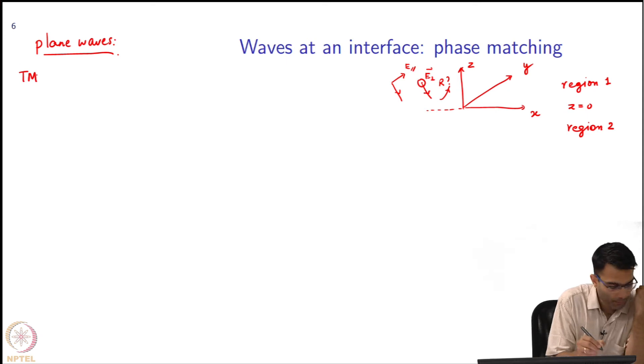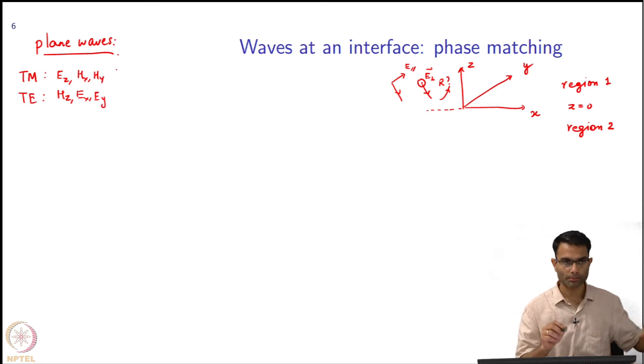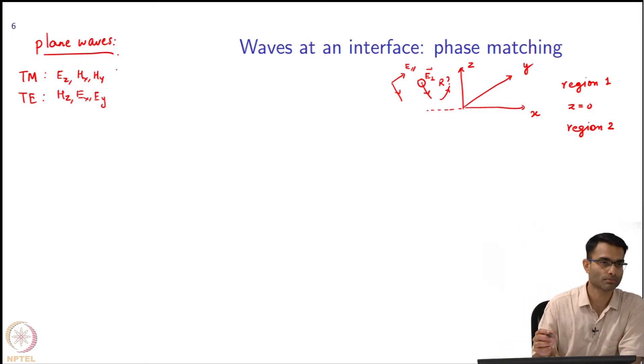In TM, I had Hz equals 0, so I had Ez, Ex, Hy. In TE I had Hz, Ex, Ey, and reality is a linear combination of these two. What we will do is start with TE and derive something - together TM is actually even easier. We will start with TE polarization.